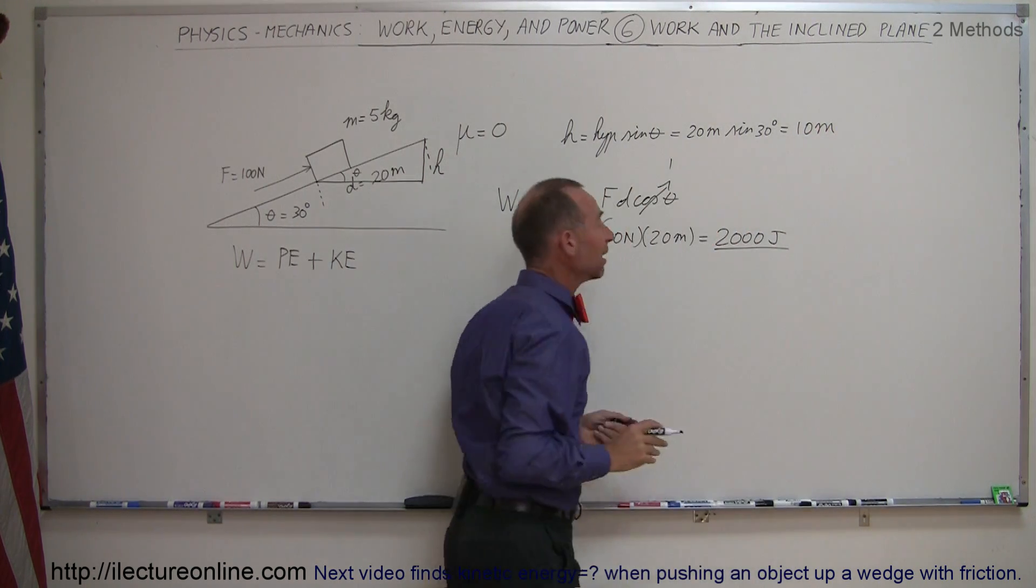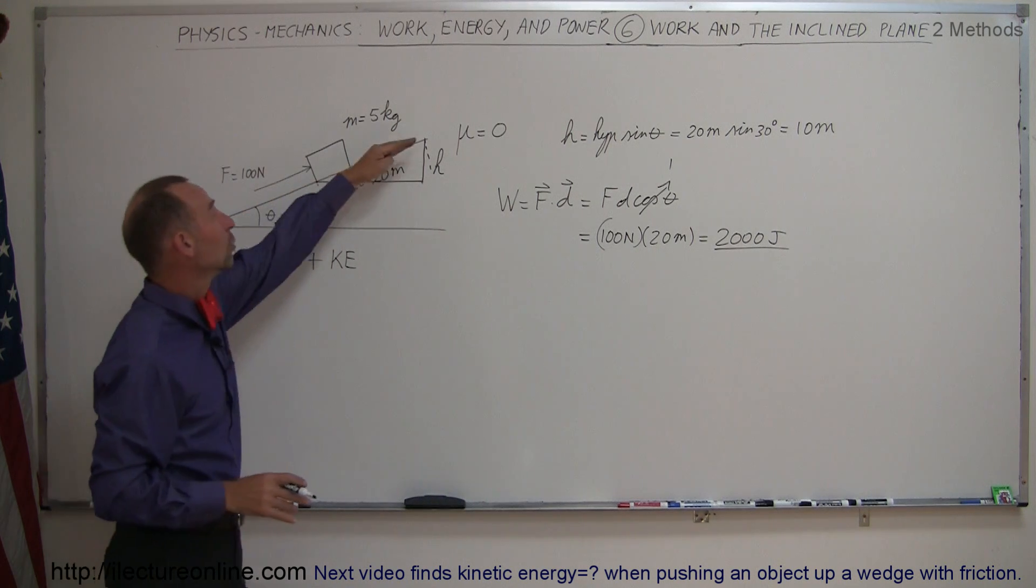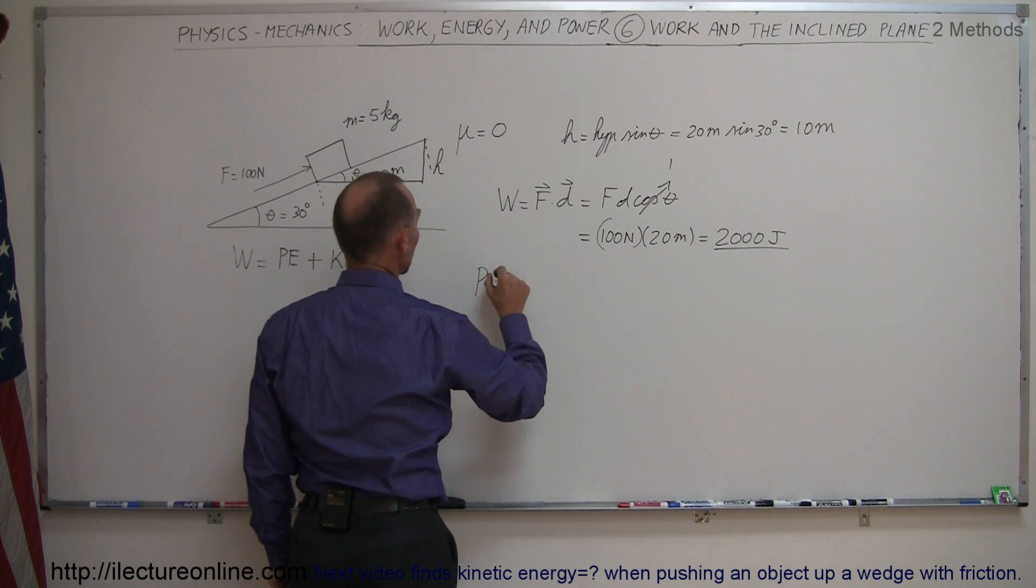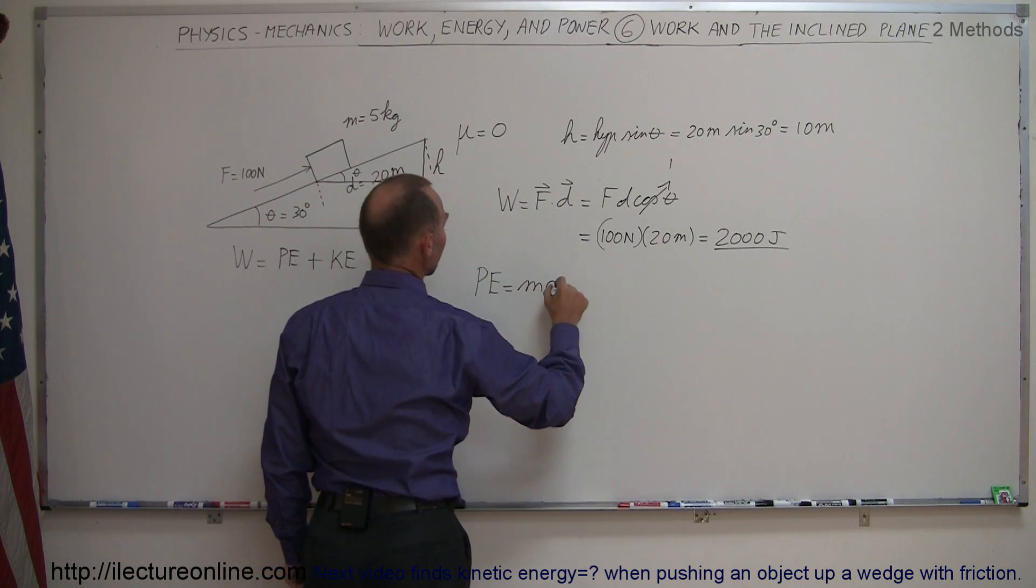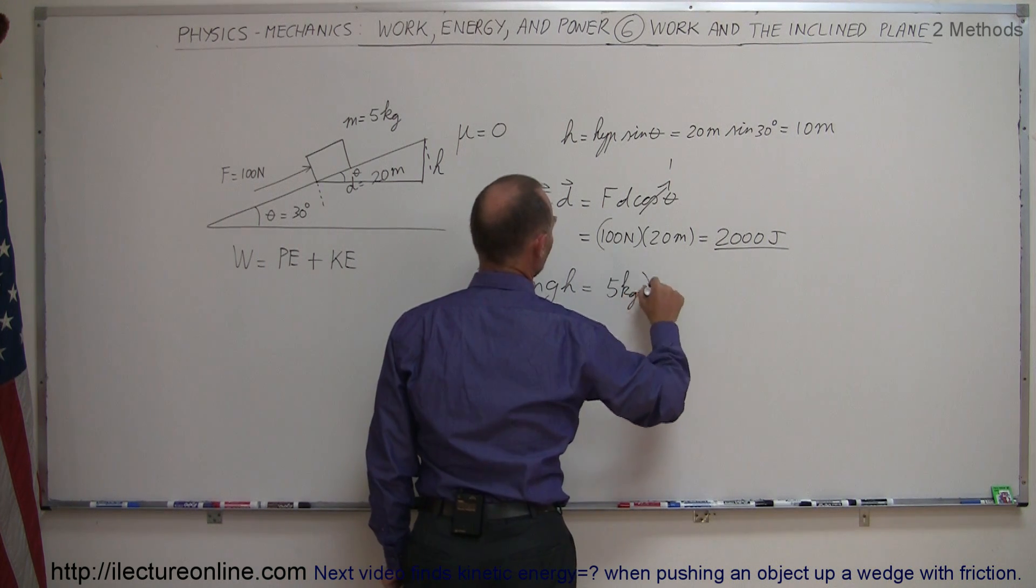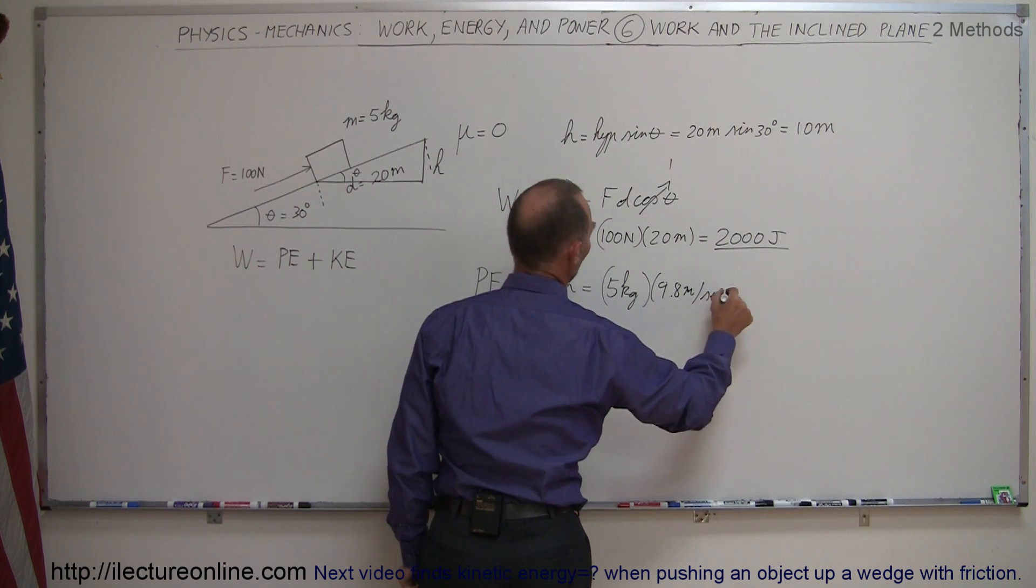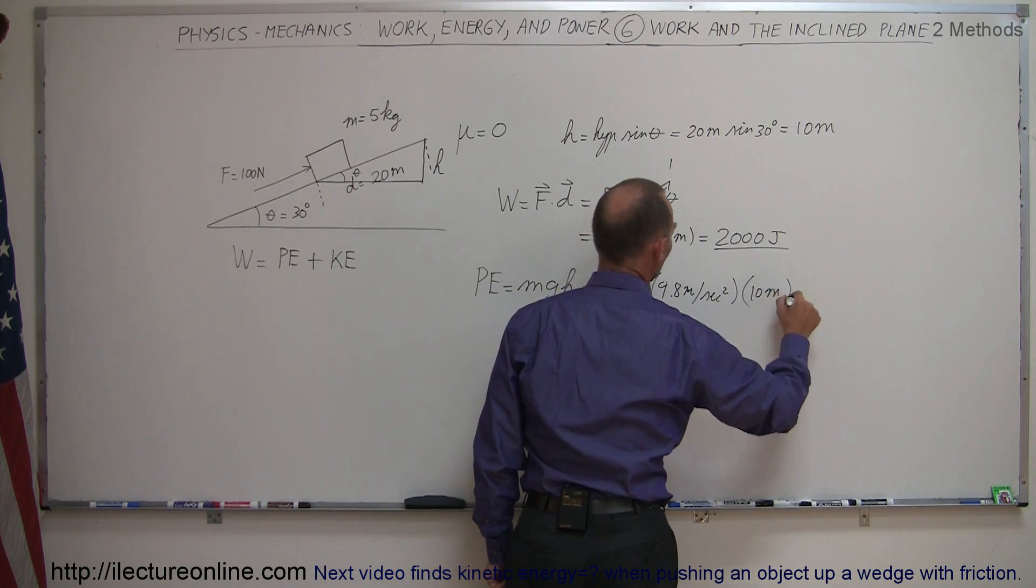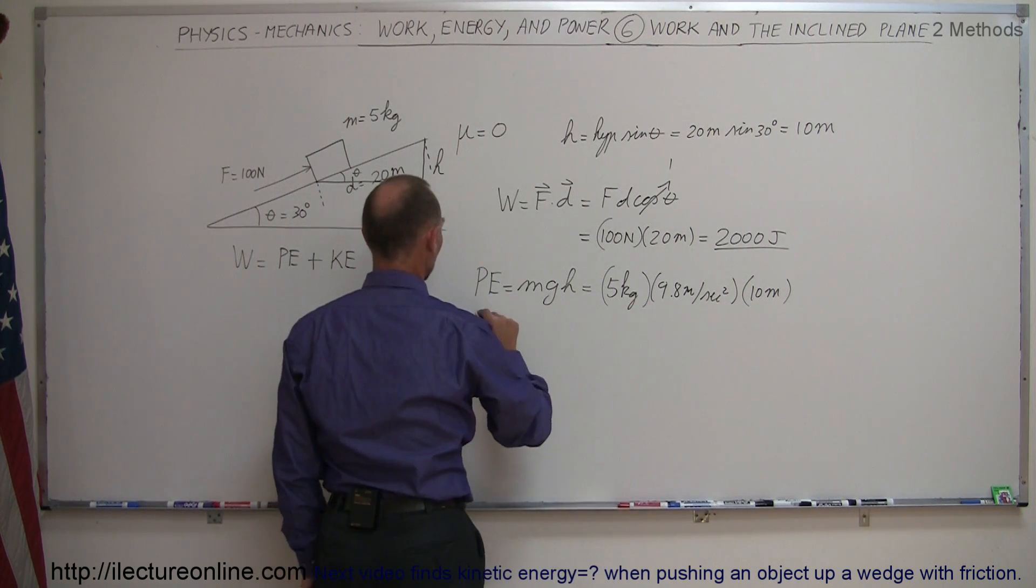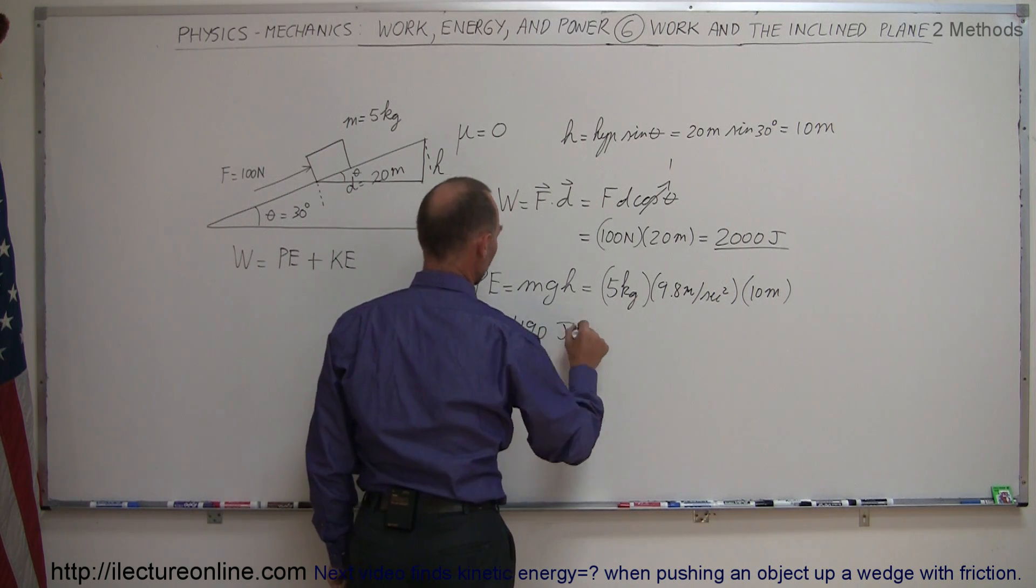So 10 meters of height was gained, which means we can now calculate the potential energy of the block when it's reached a distance of 20 meters of the incline. So the potential energy, which is calculated by saying mgh, that's equal to the mass of 5 kilograms, times g of 9.8 meters per second squared, times the height of 10 meters, so that's 5 times that is 49, times 10 is 490, so potential energy is equal to 490 joules.